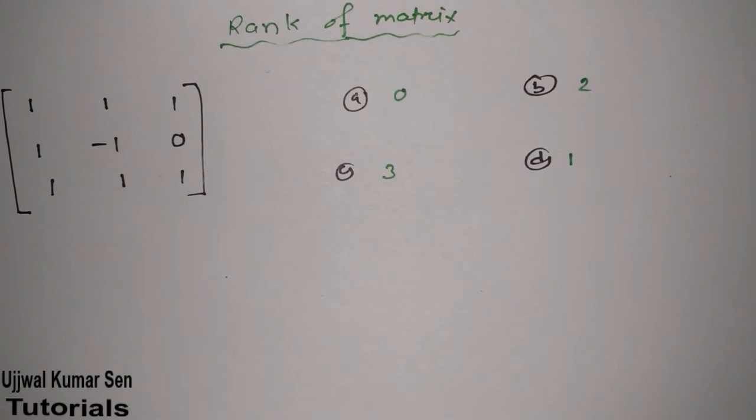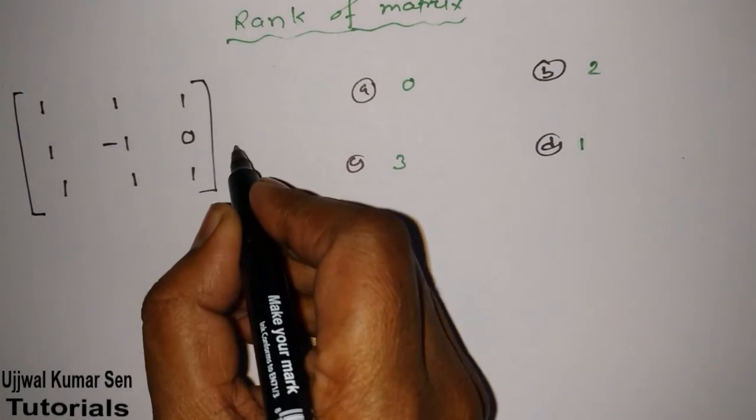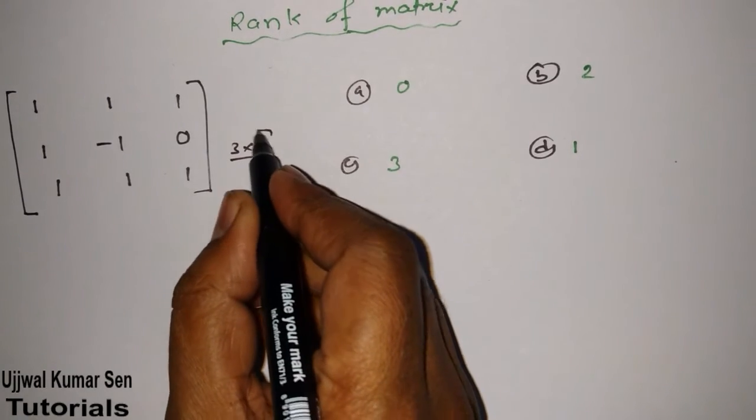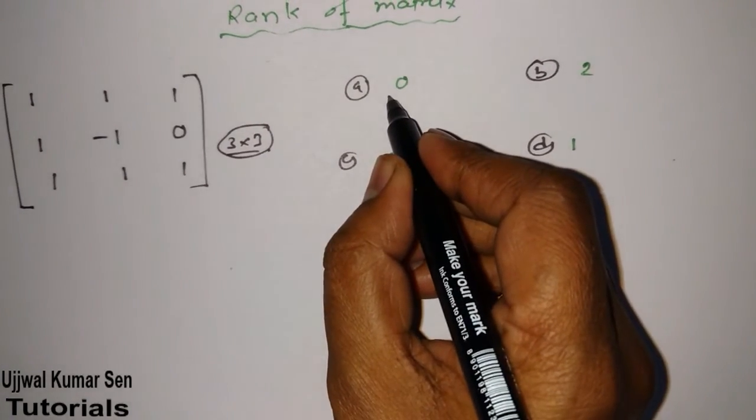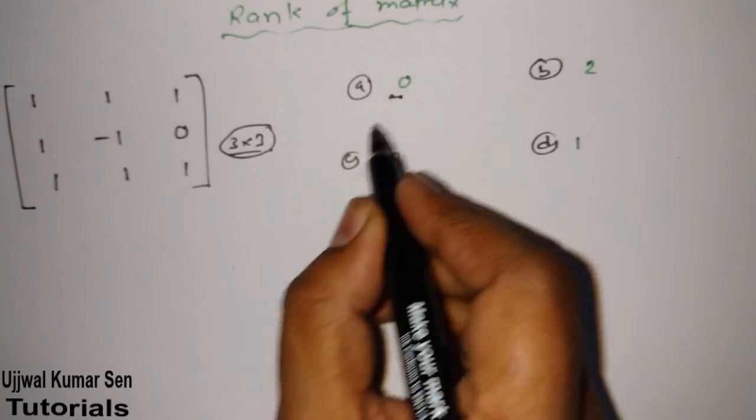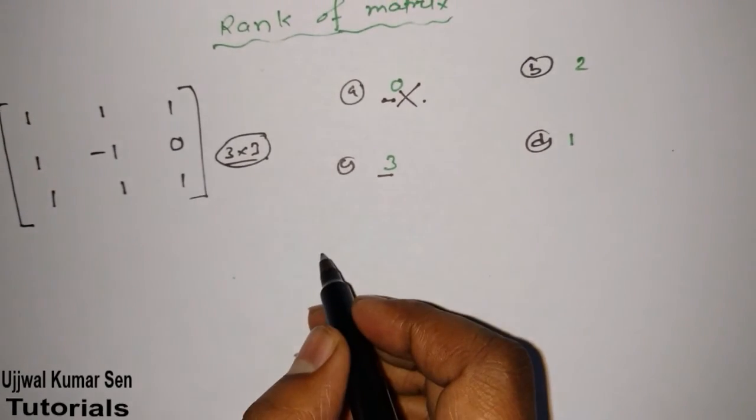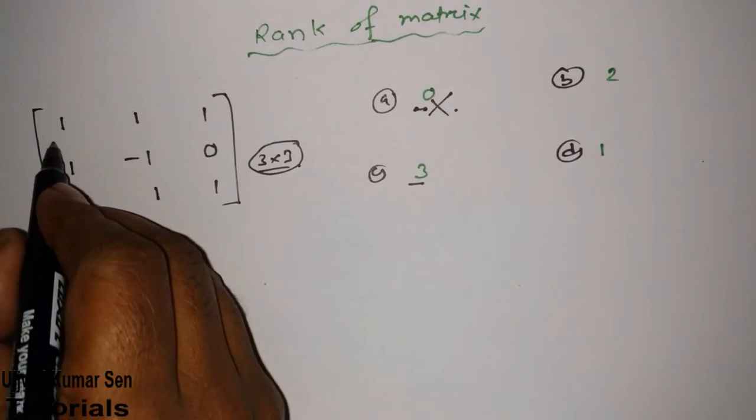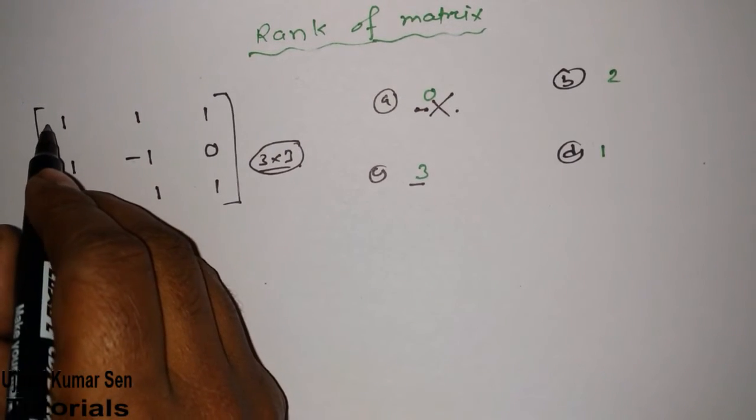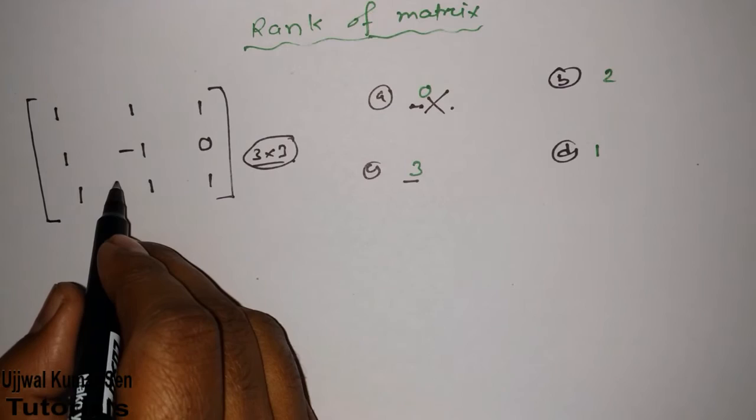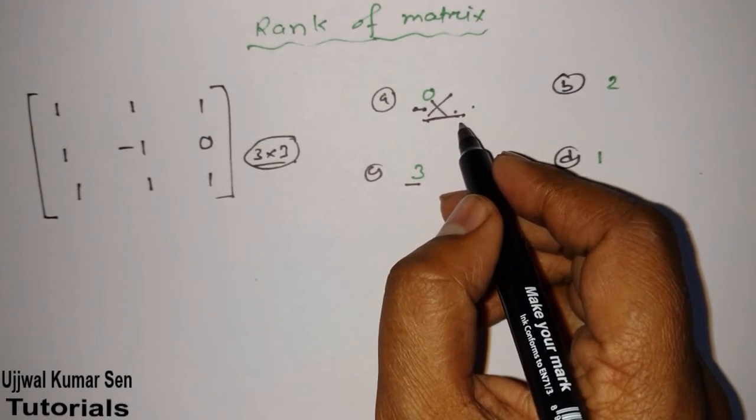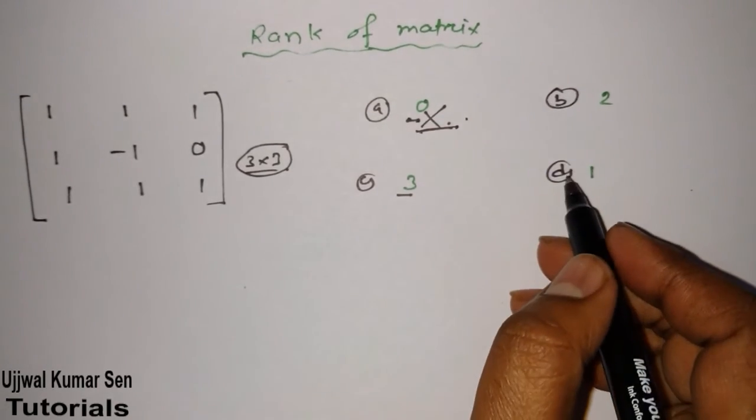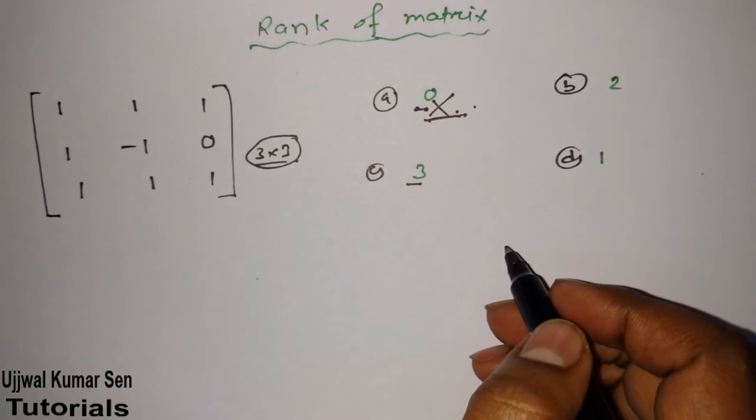First of all, the concept is: if this is a 3 by 3 matrix, the maximum rank could be 3 and minimum is zero. I want to say this one is wrong answer. Zero cannot be a rank of this matrix because at least one you see here. If all the elements are zero, it's a null matrix, then you can say zero. And 98% chances this one is a wrong answer, so among these three options we will have one answer.